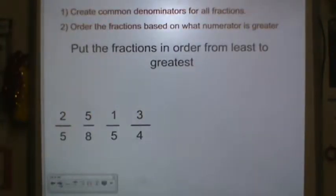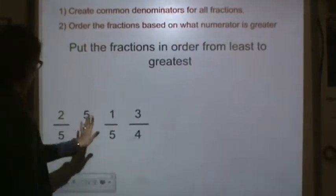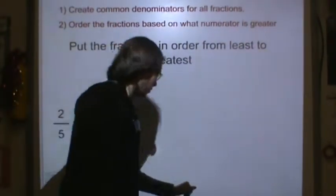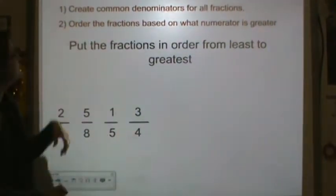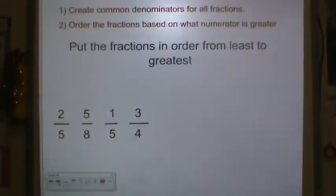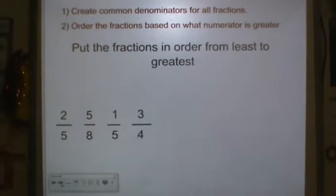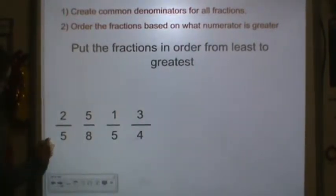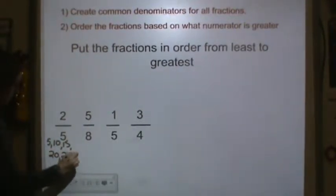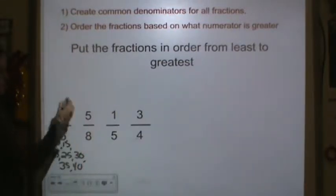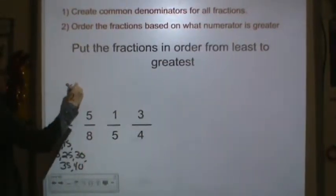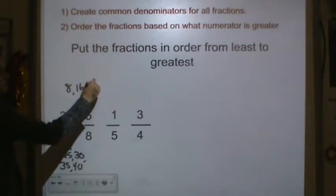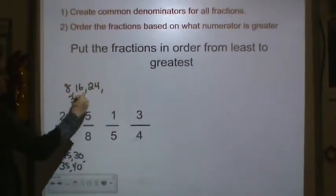Let's do another one together. So we've got 5ths, 8ths, 5ths, and 4ths. Again, I need to first find common denominators by writing the multiples. We've got 5, 10, 15, 20, 25, 30, 35, 40. 8 would be 8, 16, 24, 32, 40.